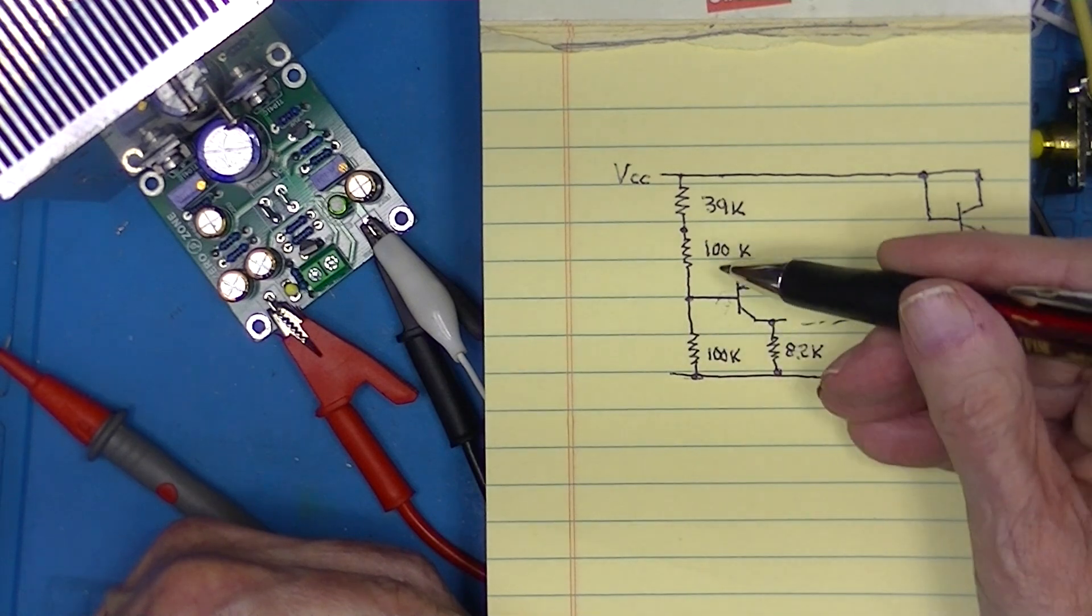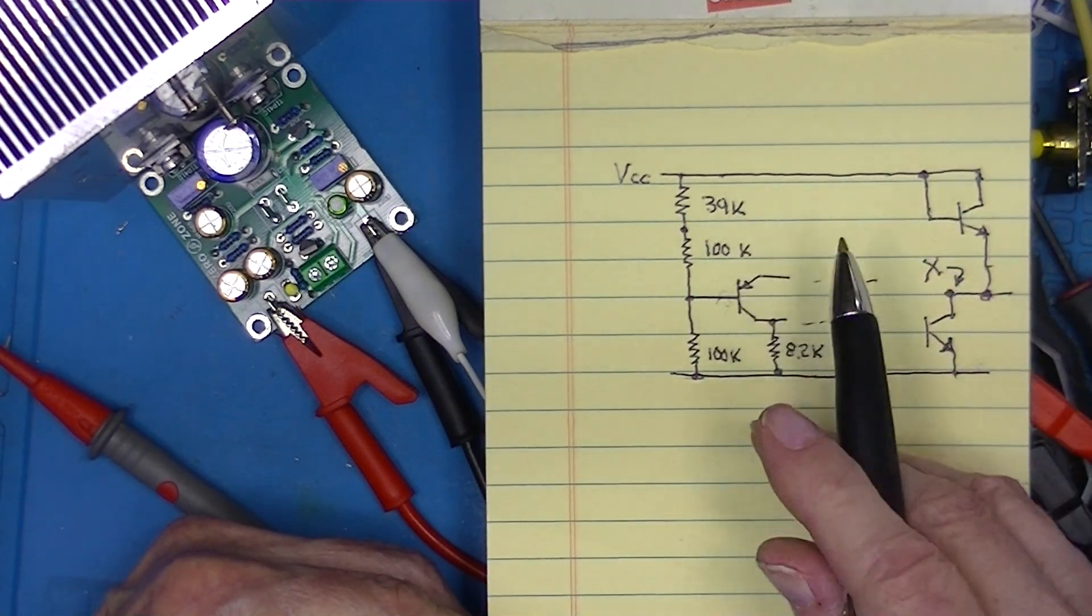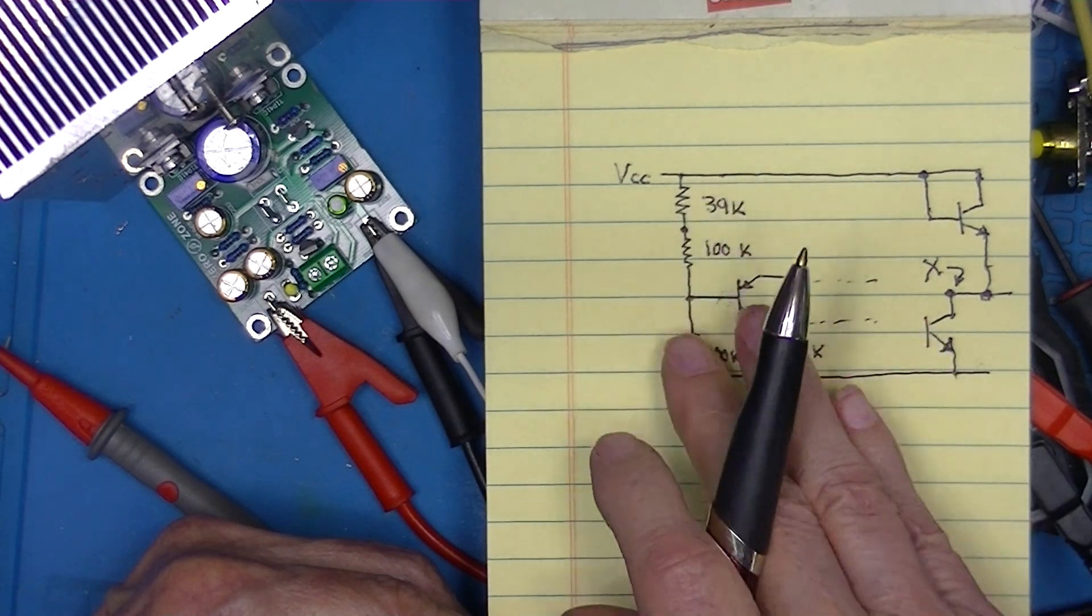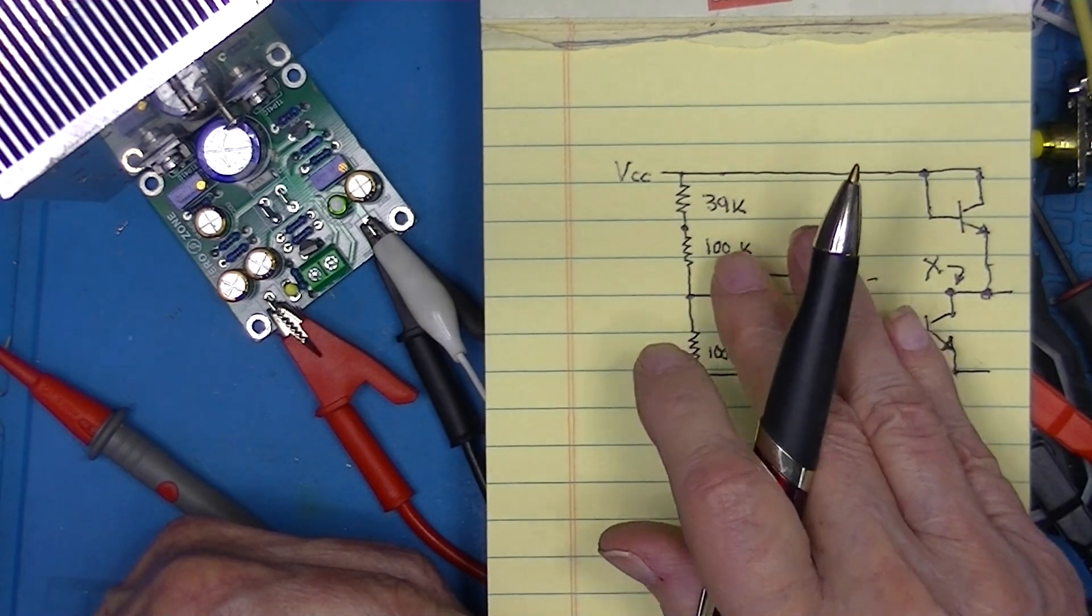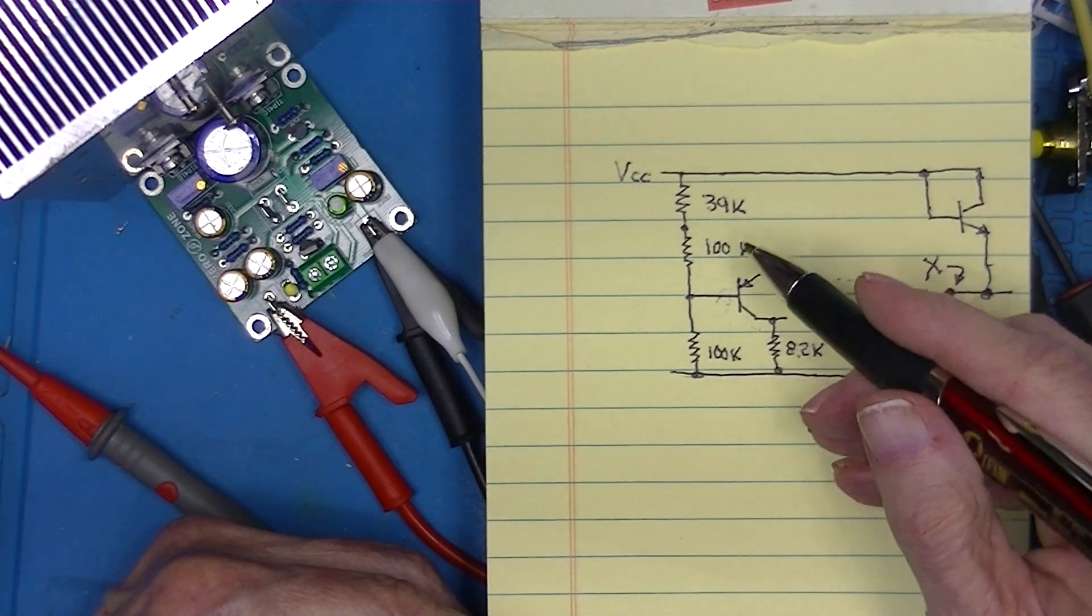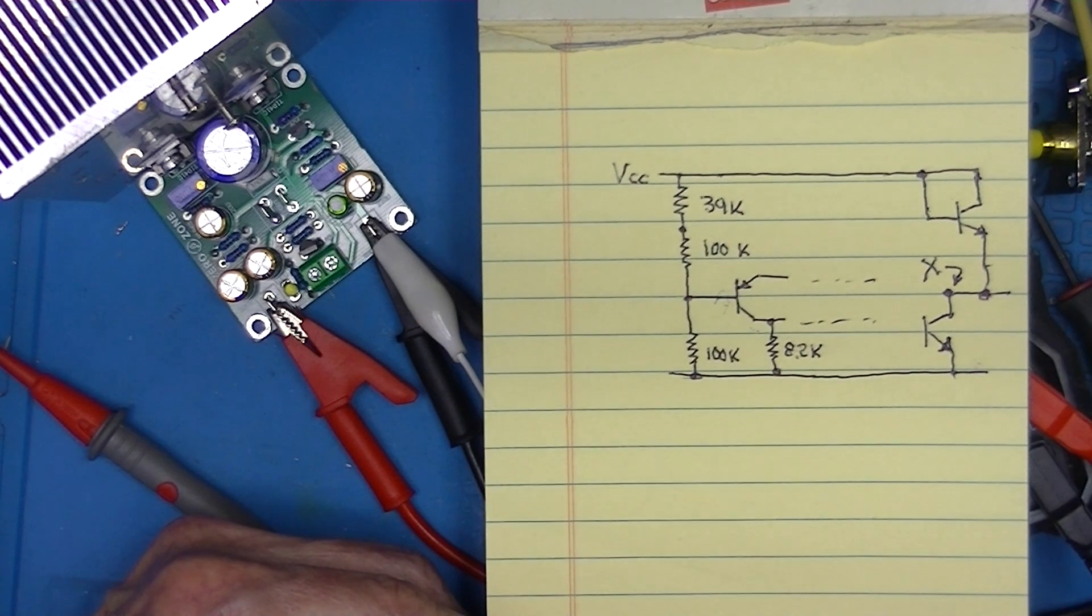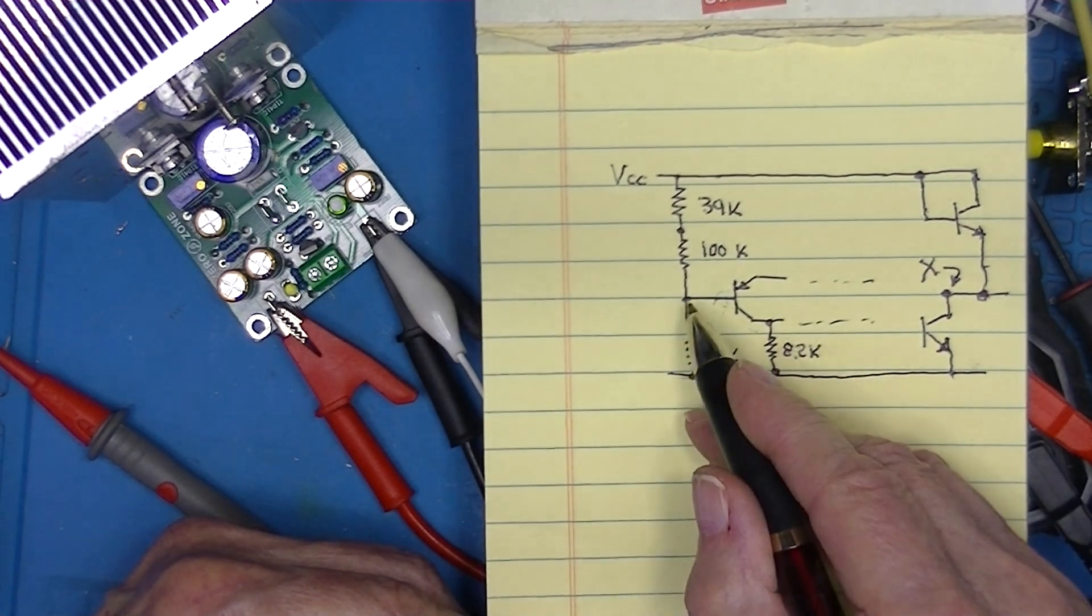If these resistances up and down were equal, or we neglect that current, it would be divided equally, but it's not equal. This is 139 and this is 100K. So let's see what voltage we actually get here when we adjust this to one half of VCC.